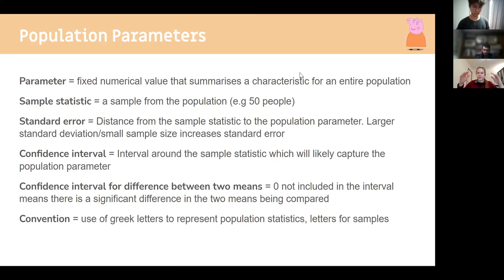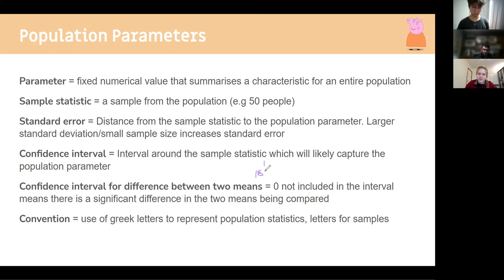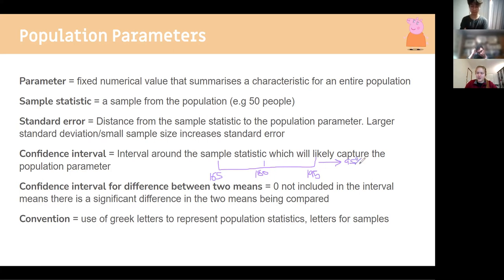Standard error is used for each statistic to calculate an overall standard deviation — how far data is from the mean. A confidence interval is the interval around the sample statistic that we think will capture most of the data. For example, if studying athlete height with a median of 180cm, a 95% confidence interval of 165–195cm means we are 95% certain that any individual's height will fall within that range.